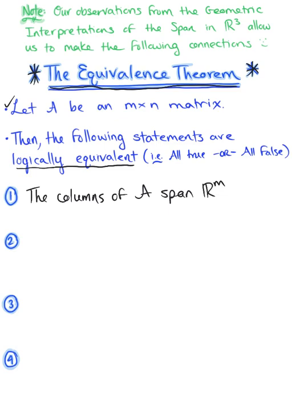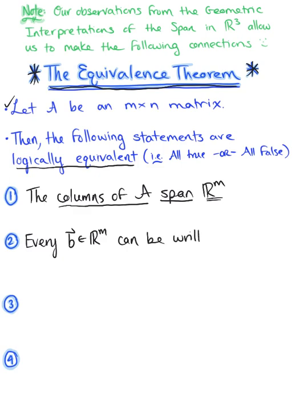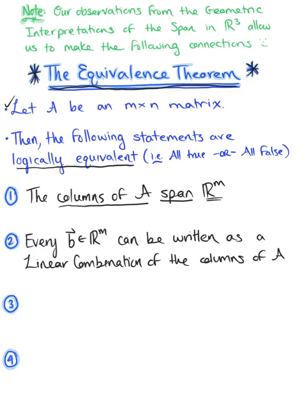Thinking about the definition of span, we know that for every vector B that lives in Rᵐ, we can rewrite that vector as a linear combination of the columns of matrix A. So every vector B in Rᵐ can be written as a linear combination of the columns of matrix A, by definition of span.